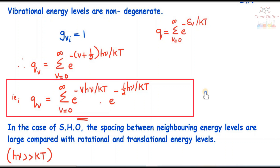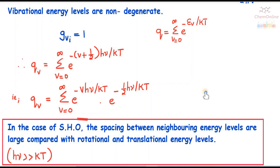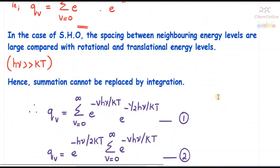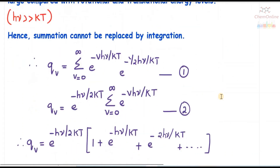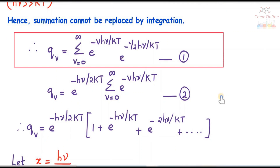That is, q_v equals summation from v = 0 to infinity of e raised to minus vhν/kT, multiplied by e raised to minus hν/2kT. While dealing with the rotational partition function, we replaced this summation term by integration. But here, in the case of the simple harmonic oscillator, the spacing between neighboring energy levels is large compared with rotational and translational energy levels, or we can say that hν is greater than kT.